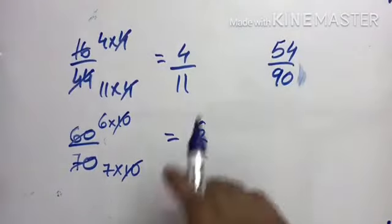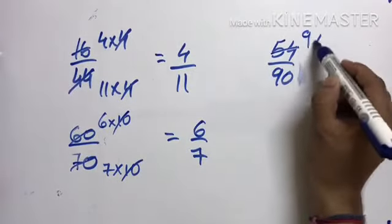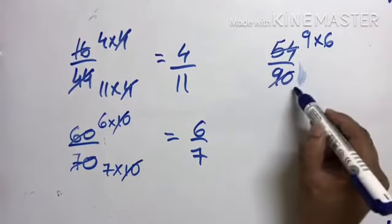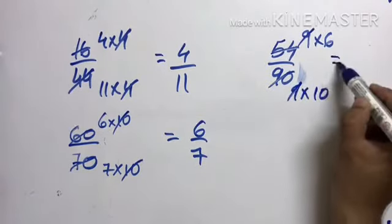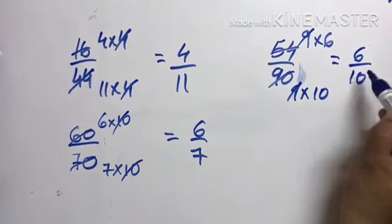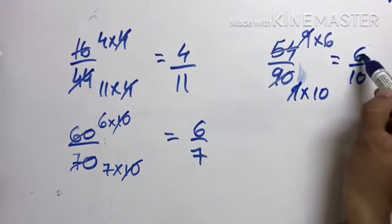54 by 90. This is 9 times 6 and this is 9 times 10. 9 and 9 cut. 6 by 10.